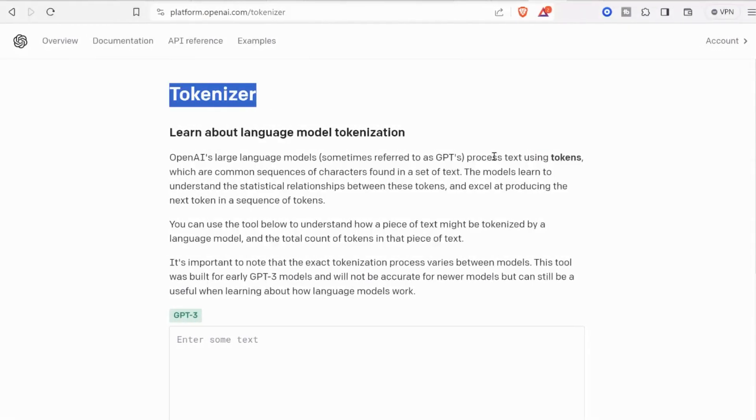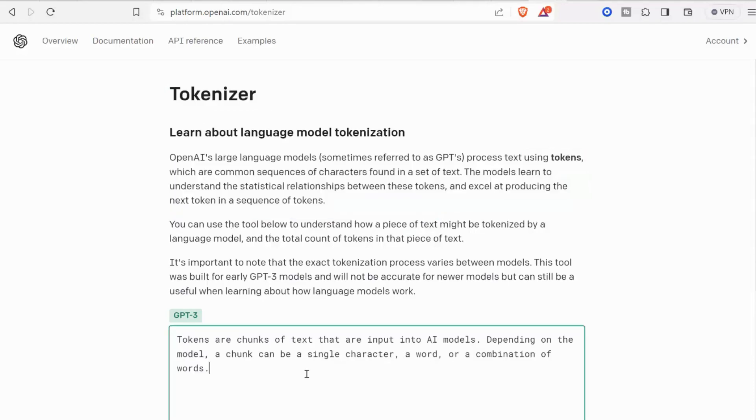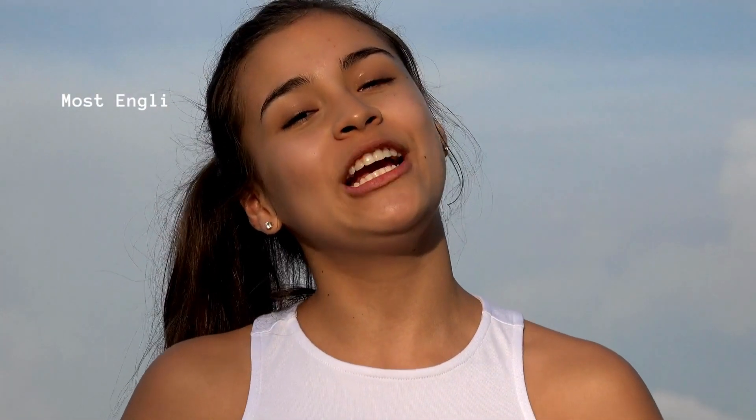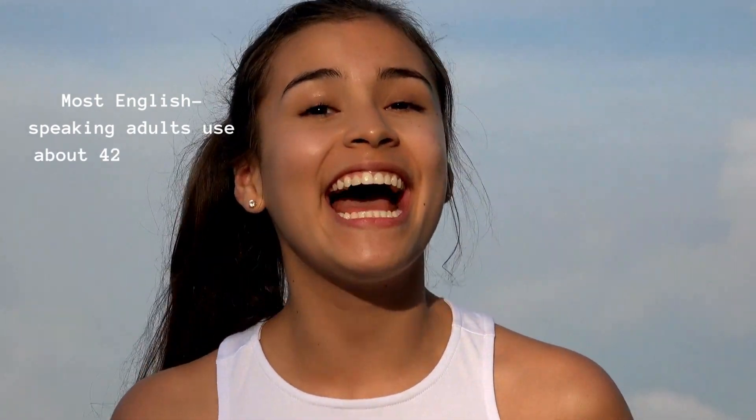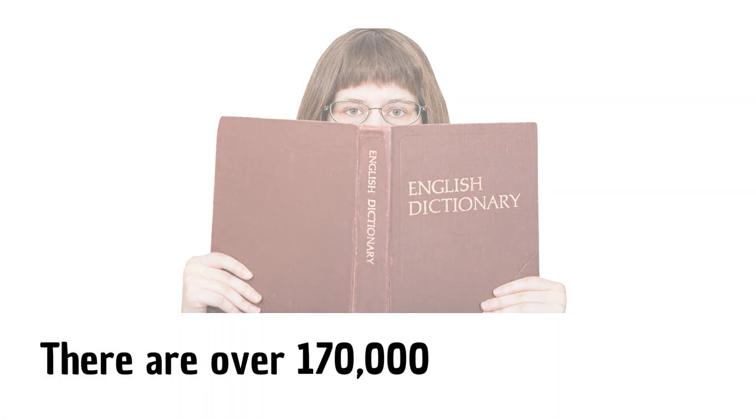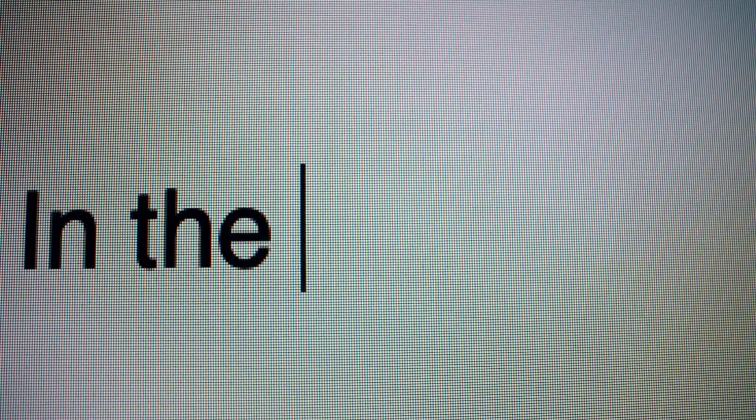Tokens are chunks of text that are input into AI models. Depending on the model, a chunk can be a single character, a word, or a combination of words. It is estimated that most English-speaking adults use about 42,000 words regularly, but there are over 170,000 words in English. Based on this vast vocabulary, GPT determines what the next word in a sentence should be.